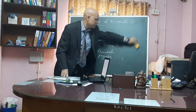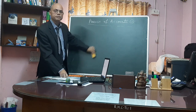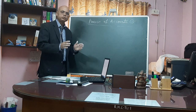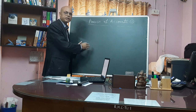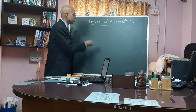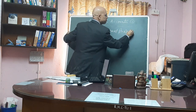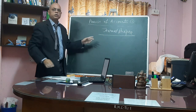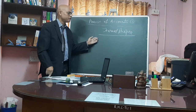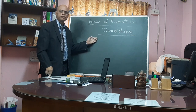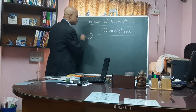Under special journal, all these subdivisions are used to record transactions as they occur in the business. Transactions not recorded in any of the subsidiary books under special journal are recorded in journal proper.